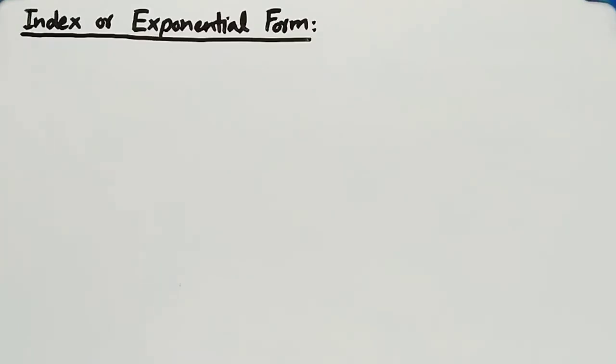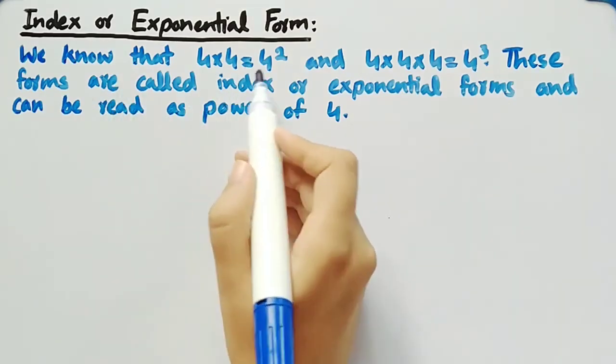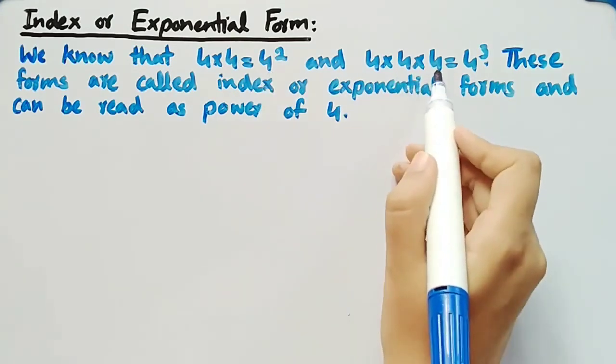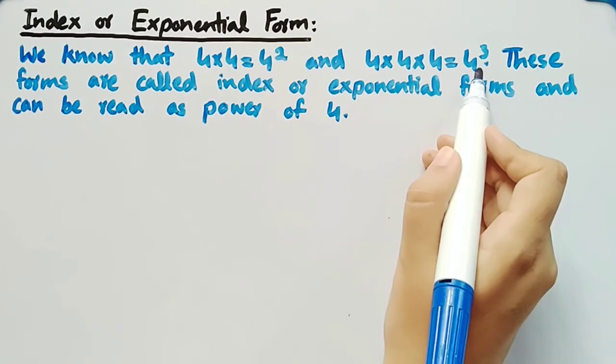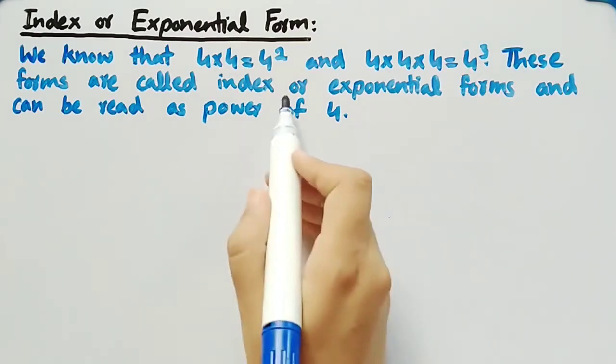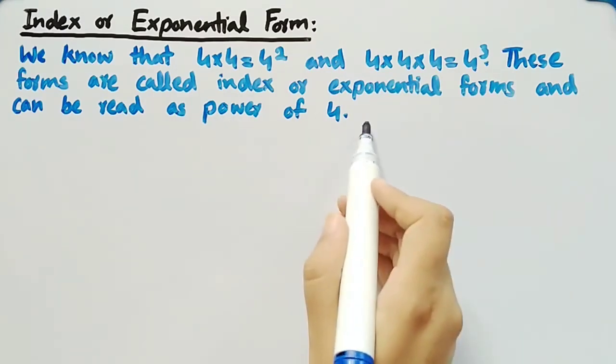Now, we will discuss index or exponential form. We know that 4 multiplied by 4 is equal to 4 square, and 4 multiplied by 4 multiplied by 4 is equal to 4 cube. These forms are called index or exponential forms and can be read as power of 4.